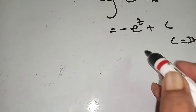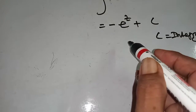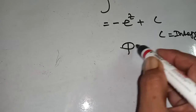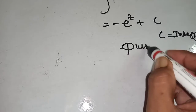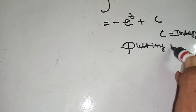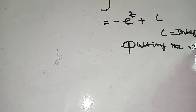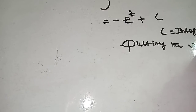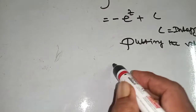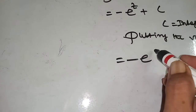Now putting the value of z back, we get minus e to the power cos inverse x, plus c.